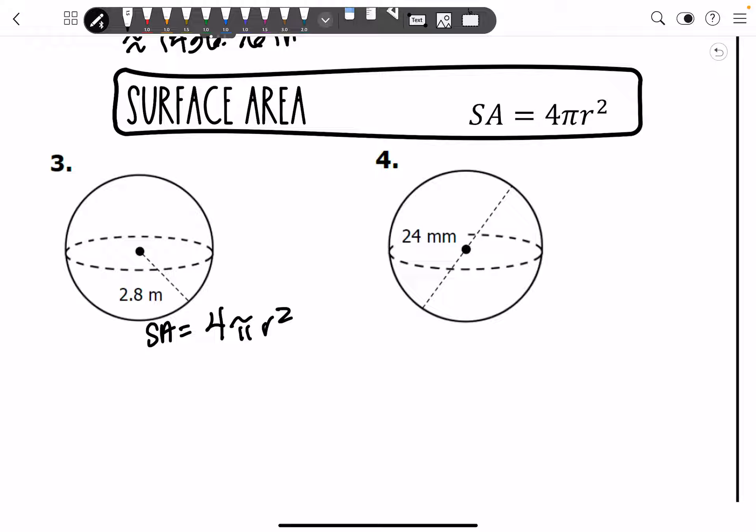And so all we're going to do is type it in. 4 pi r squared. So I'm going to do 2.8 squared. And then multiply that by 4. And that's going to give me my exact answer of 31.36 pi meters squared.